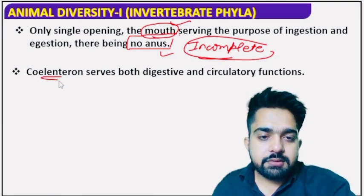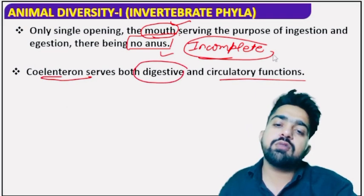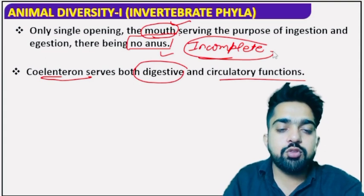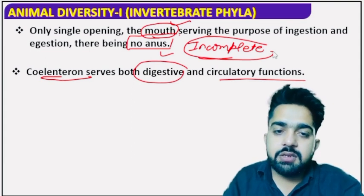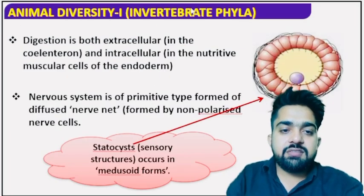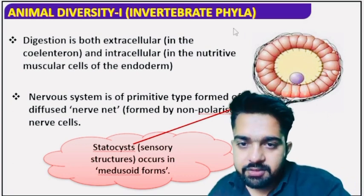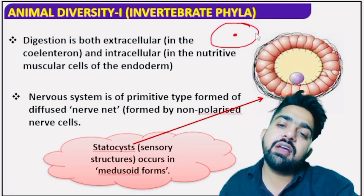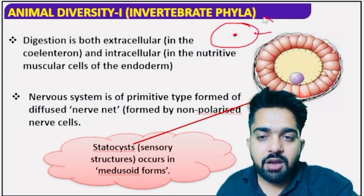The coelenteron or gastrovascular cavity shows both digestive as well as circulatory functions — combining the circulatory system and digestive system. Digestion is both extracellular and intracellular. When digestion takes place inside the cell, it is considered intracellular digestion. When digestion takes place outside the cell but inside the body, that is extracellular digestion.